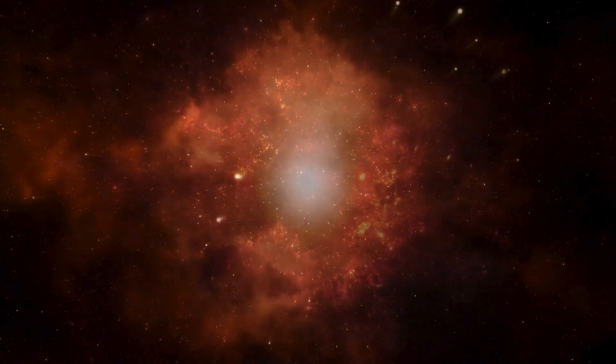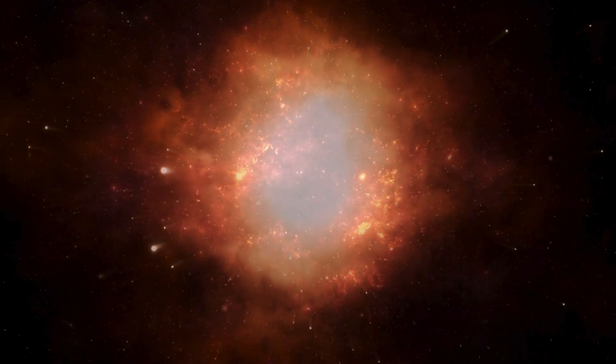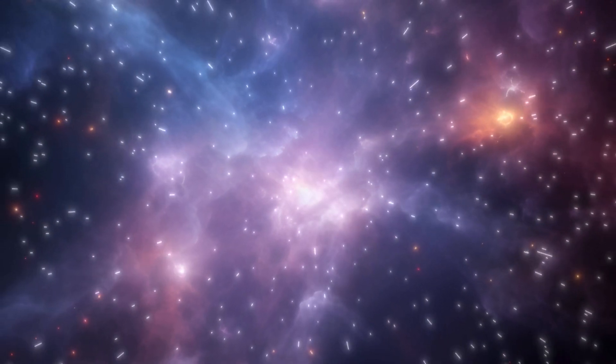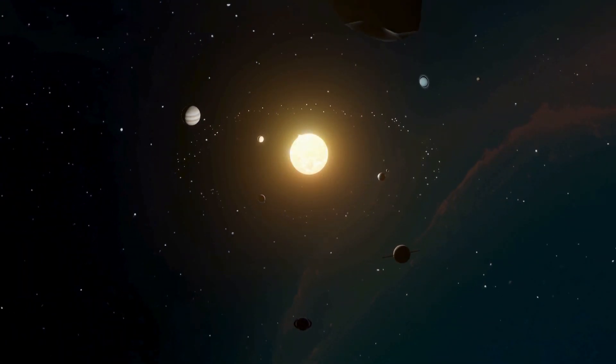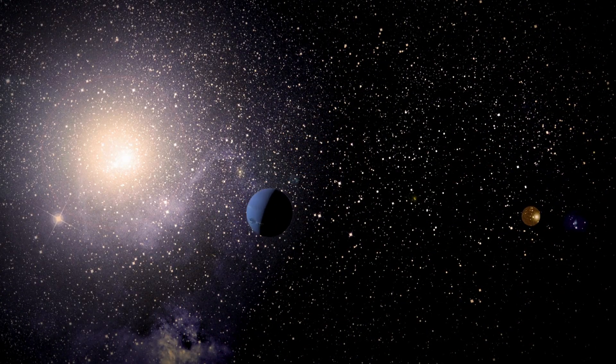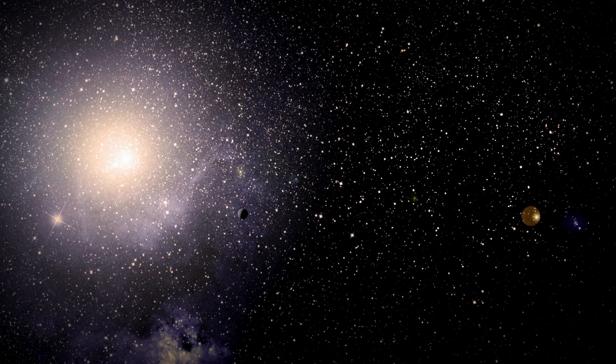Currently, it takes Voyager 1 approximately 22 hours to relay a radio message to Earth, a delay that grows by several light seconds each day. The increasing distance complicates communication, as Earth's background noise further diminishes the clarity of the faint signals.